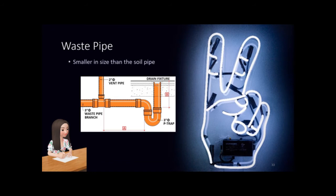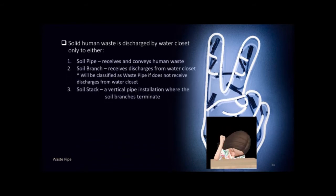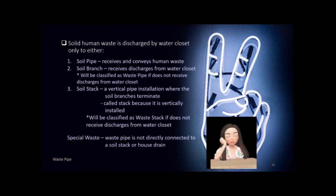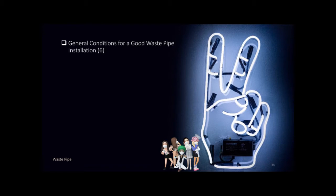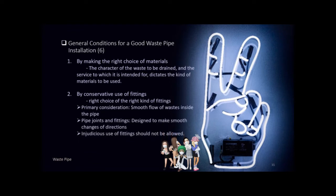The waste pipe is generally smaller in size than the soil pipe because of the kind of waste it receives from various plumbing fixtures. Solid human waste is discharged by water closets only to either the soil pipe, soil branch, or soil stack. Any pipe that receives and conveys human waste is affixed with the word 'soil.' When a waste pipe is not directly connected to a soil stack or house drain, it is called a special waste. General conditions for a good waste pipe installation include making the right choice of materials based on the character of the waste, and conservative use of fittings to ensure smooth flow of wastes inside the pipe.